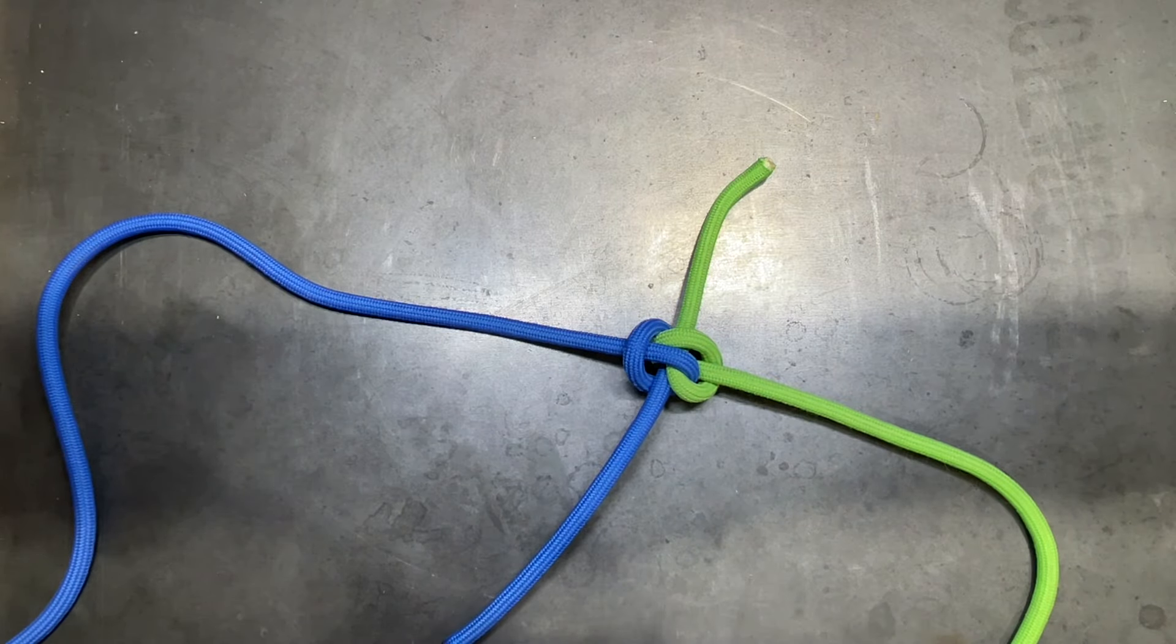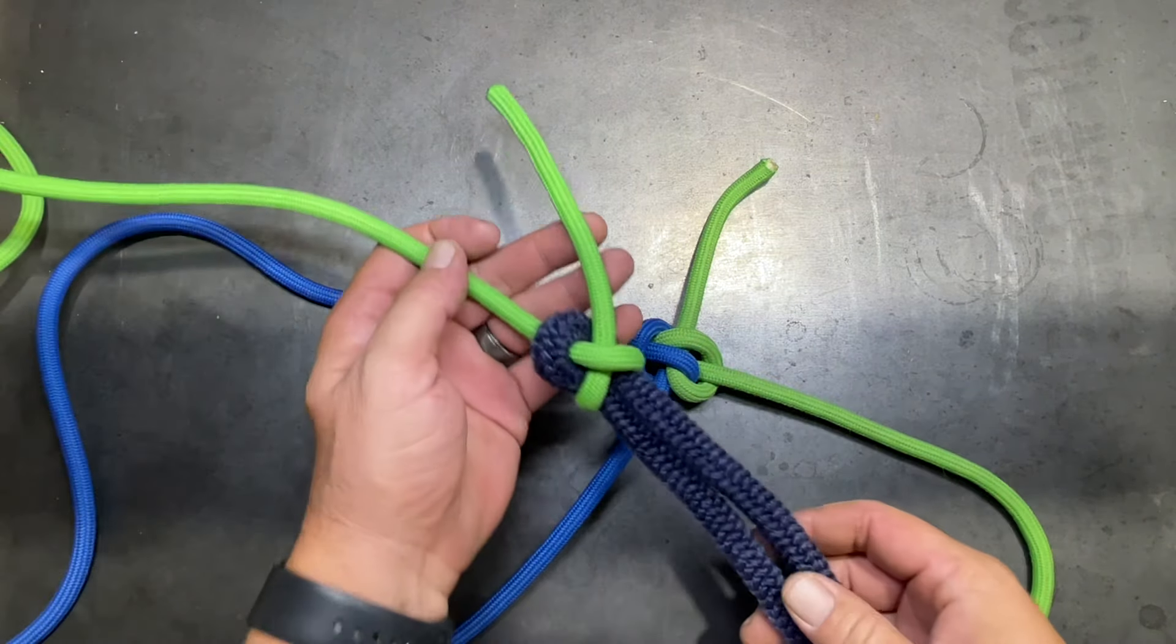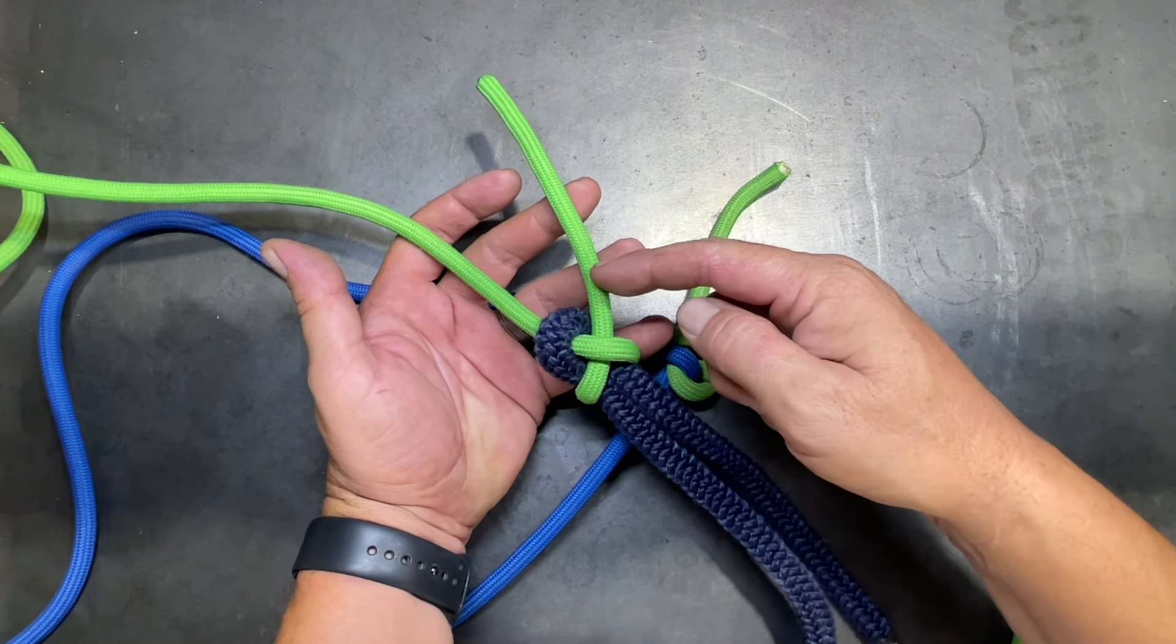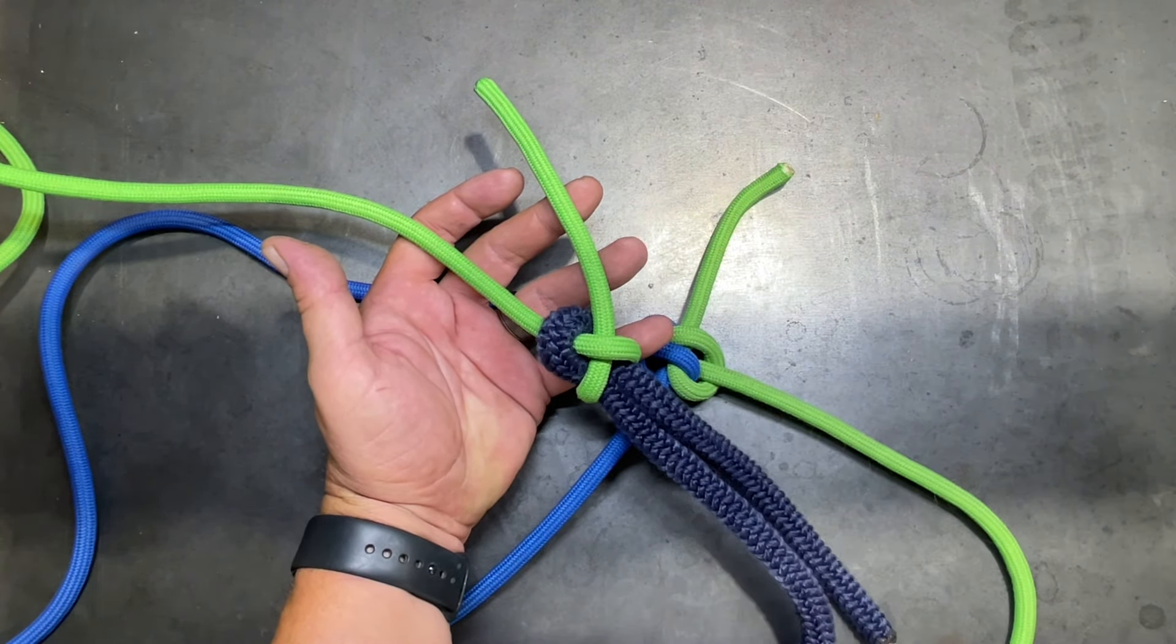Now this works well in lines that are the same size or relatively close in size to one another. But once you get too far apart, then there's other bend knots like the sheet bend that serve that purpose better.